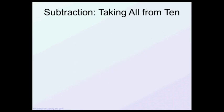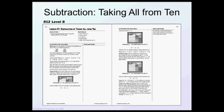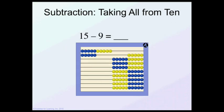Let's do another strategy called taking all from 10. If I have 15 minus 9, so I have 15 beads on, I'm going to take the 9 from the 10. And what do I have left? 6. It doesn't really matter where we take it from. In this case, we're taking it from the 10, so I can see that I have 6 left.